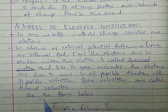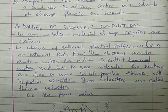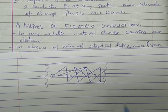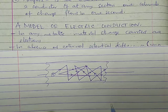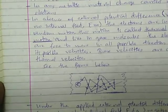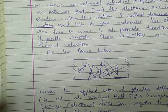Electrons can move in different directions with different possible velocities. In the absence of an external electric field, the electron has no specific direction. But in the presence of an external electric field, the electron will start to follow a certain direction, and thus the movement of the electron will be in a certain direction.